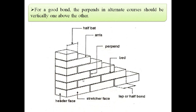For a good bond, the perpents in alternate courses should be vertically one above the other. Suppose this is the first course, this is the second course and this is the third course. Alternate courses means the first course and third course are the alternate courses. So the perpents in alternate courses should be vertically one above the other as shown in this image.